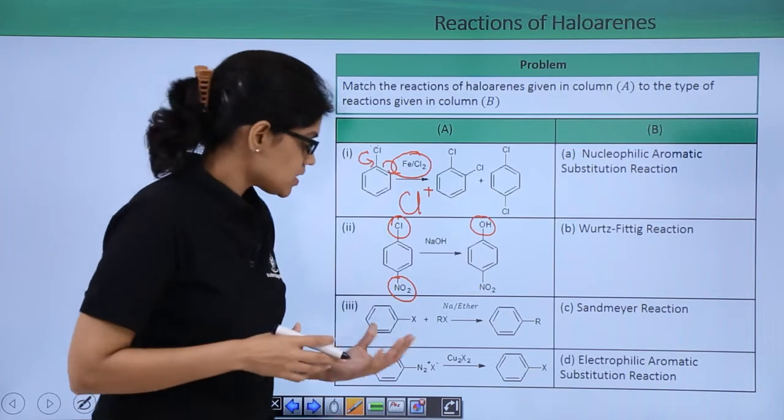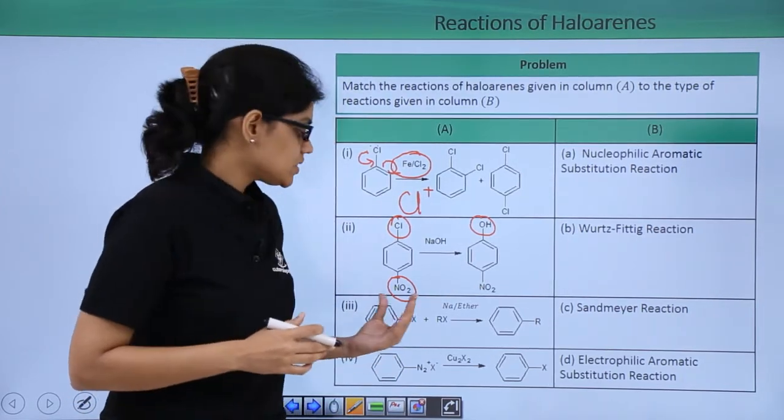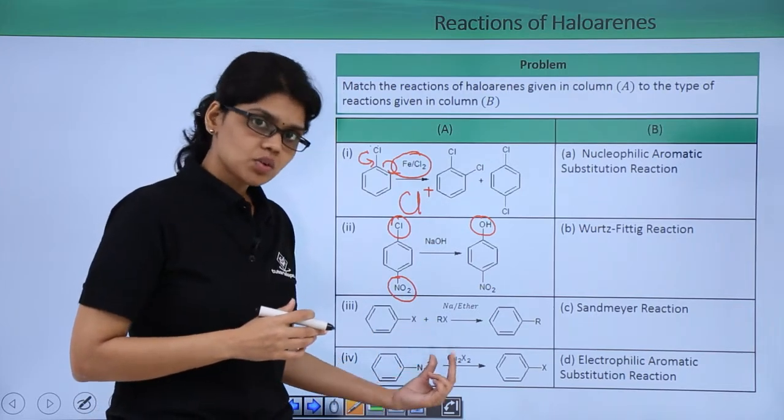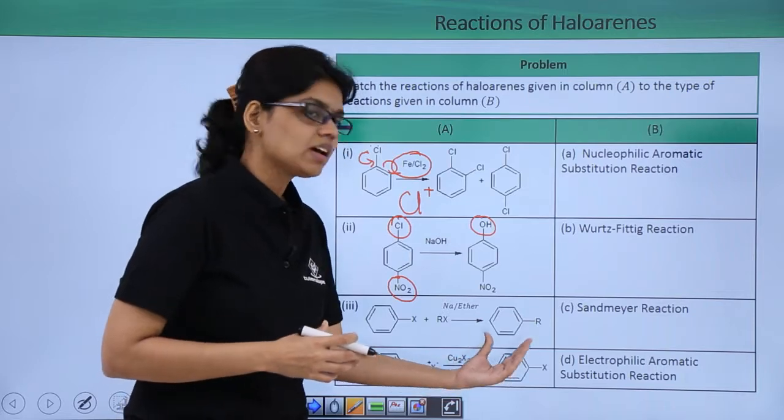Let us look at the last reaction here. The starting reactant is a diazonium salt and this diazonium salt reacts with CuX2 to give a final substituted product which is nothing but a haloarene.